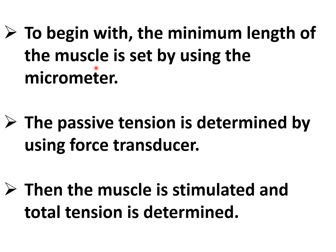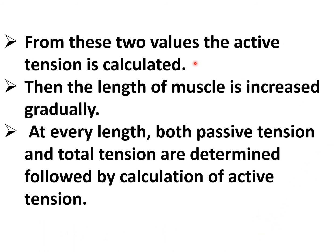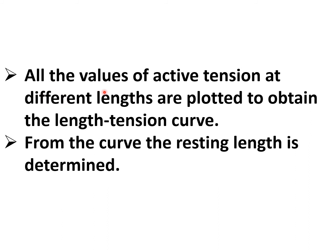To begin with, the minimum length of the muscle is set using a micrometer. The passive tension is determined by the force transducer, then the muscle is stimulated and total tension is determined. From these two values, active tension is calculated. Then the length of the muscle is increased gradually. At every length, both passive tension and total tension are determined, followed by calculation of active tension. All values of active tension at different lengths are plotted to obtain the length tension curve. From this curve, the resting length is determined.